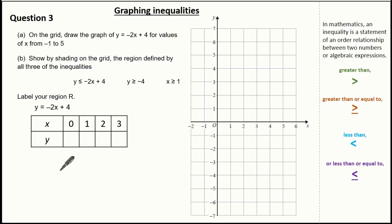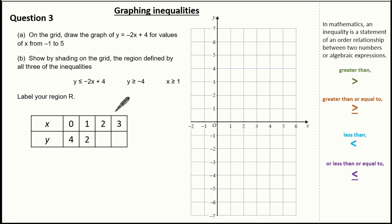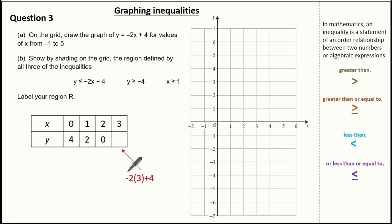Starting with a table, I'll choose x values 0, 1, 2 and 3, making sure the line goes from x equals minus 1 to 5. Using y equals minus 2x plus 4: when x is 0, y is 4; when x is 1, y is 2; when x is 2, y is 0; when x is 3, y is minus 2. From here I can draw my straight line.